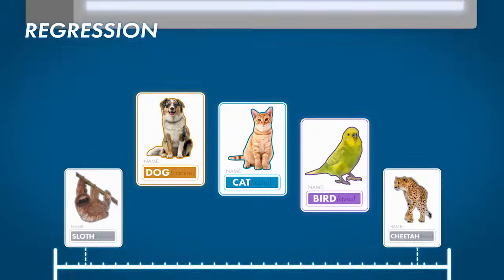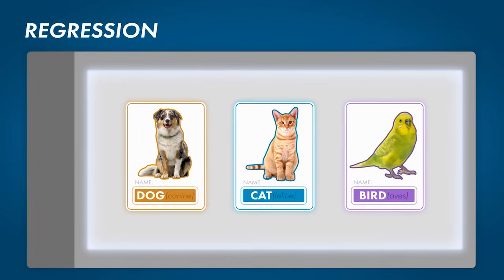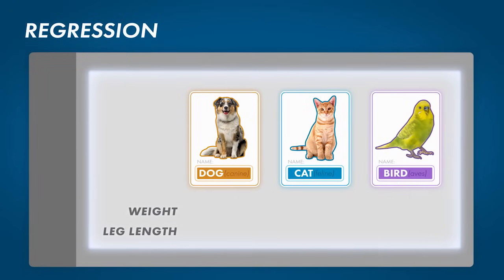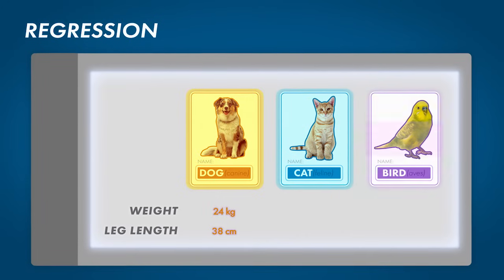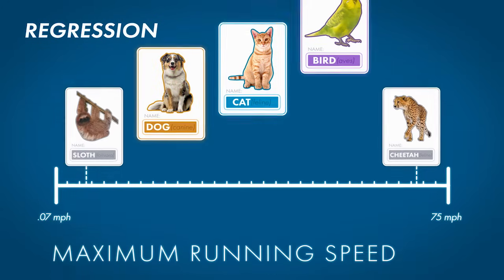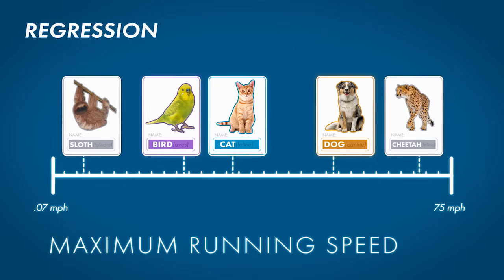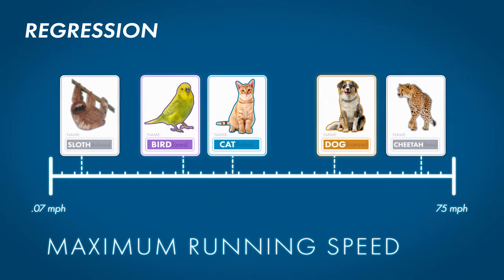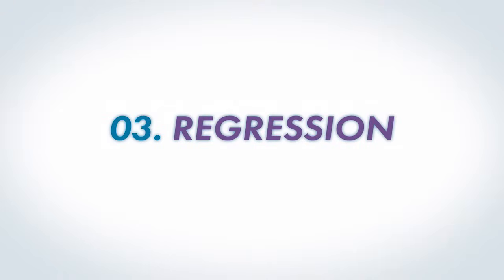Select features that may be relevant. For example, let's try the weight of an animal and how long its legs are. The model uses these features to estimate where the animal lands on that speed continuum. That's regression.